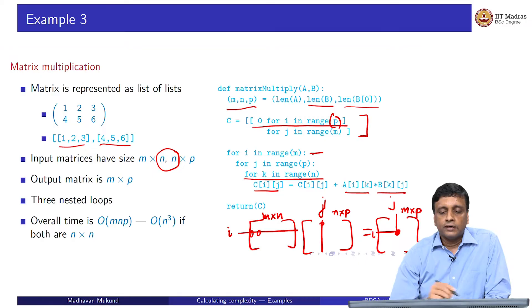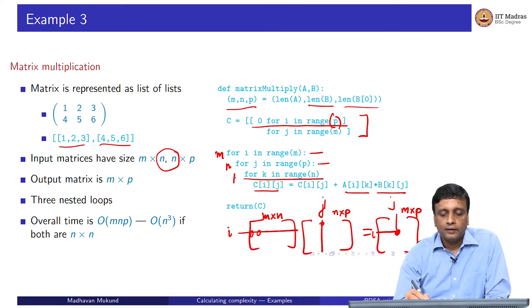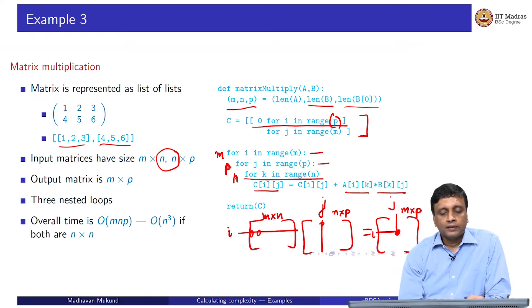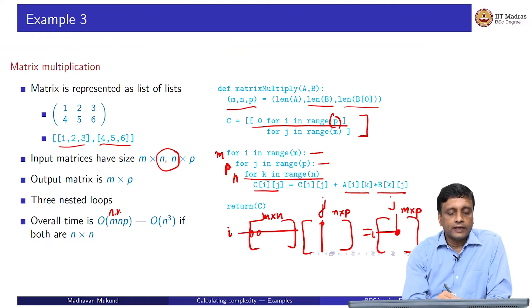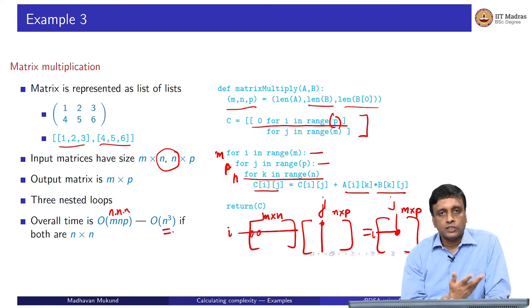This is three nested loops. The outer loop over rows of A takes m iterations, the loop over columns of B takes p iterations, and the inner loop over k takes n iterations. So the total is m times n times p — the number of rows in A times the number of columns in B times the number of columns in A (which equals the number of rows in B). If we are multiplying square matrices where m equals n equals p, this becomes n × n × n, or n cubed. So here we see a natural example of a problem which is higher than n squared — it is order n cubed.